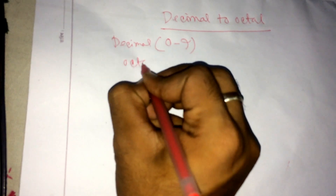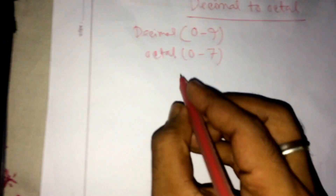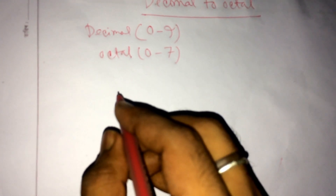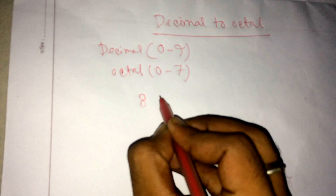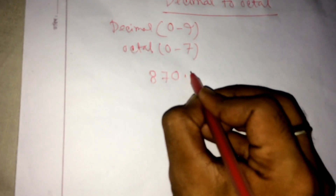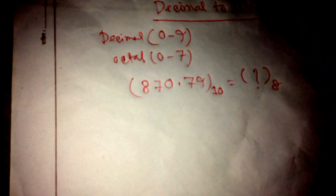Hello friends, today I'm going to show you how to convert decimal to octal. Decimal's limit is zero to nine, and octal's limit is zero to seven. First we choose a decimal number — we choose the number 870.79 — and let's convert it from decimal to octal.